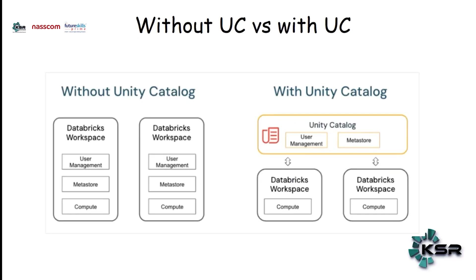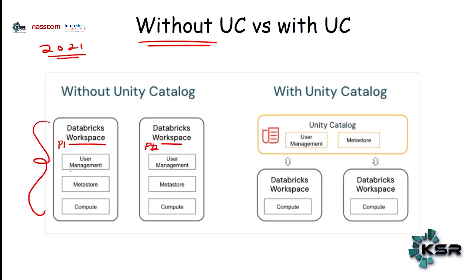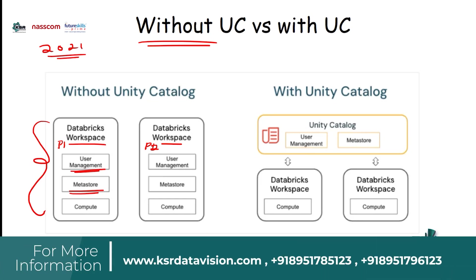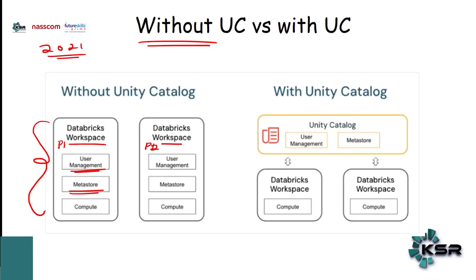This is exactly what is happening in Databricks. Imagine we have a Databricks workspace — let's consider this as project one and this as project two. Before 2021, without Unity Catalog, each workspace needed separate access and a separate metastore. A metastore stores metadata — data about the original data, such as file size, file name, when it was loaded, format, and columns. For every project, you have separate user management, a separate metastore, and a separate compute engine.